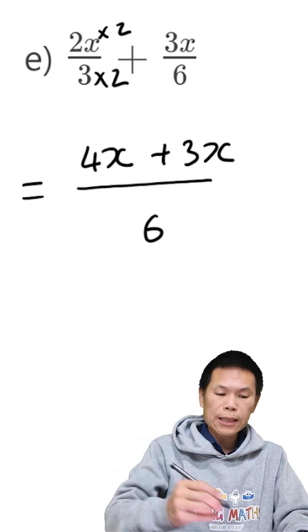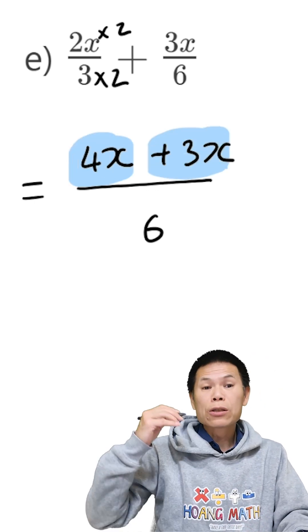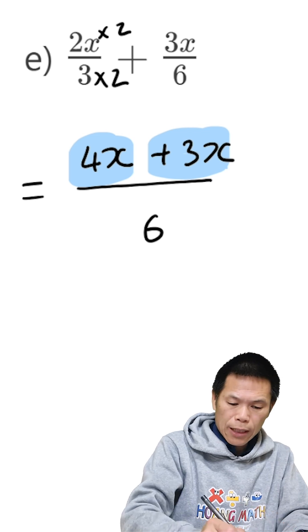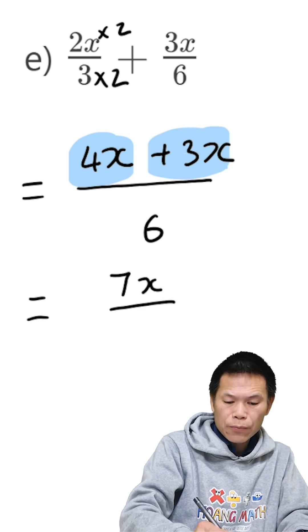So now we just collect the like terms. So we have 4x, we add 3x. So 4 plus 3 is 7. So the answer is equal to 7x over 6.